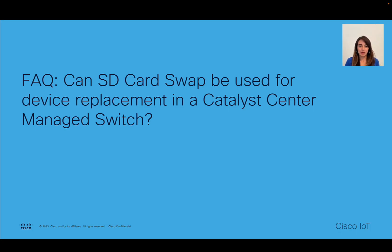We get the frequently asked question: can we use SD card swap to replace a switch that is managed by Catalyst Center? The answer is yes, but in that case we won't be using the Catalyst Center RMA workflow. Note that the Catalyst Center RMA workflow has some advantages — it updates SNMP version 3 credentials in the device and also updates Catalyst Center inventory and ICE inventory.